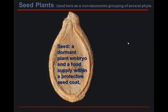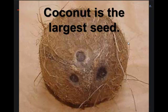A seed is a dormant plant embryo and a food supply within a protective seed coat. There really is a little plant in there and you can actually see its stem, its leaves, and its first root. A seed is much better positioned for survival than a spore, because a seed has more development as a plant embryo and it also has a food supply. The coconut is the largest seed — a piece of trivia.